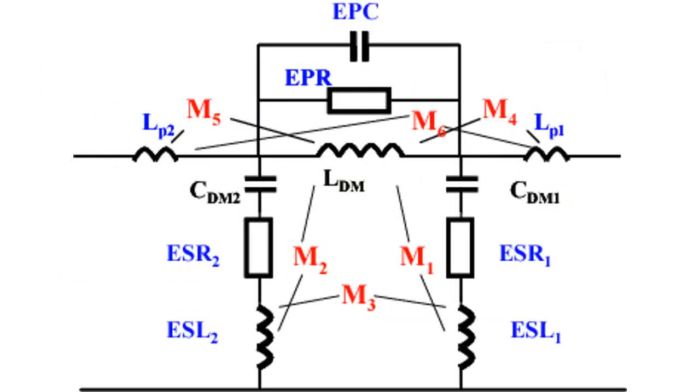Differential mode noise is a result of parasitic components in a circuit, such as equivalent series inductance (ESL), equivalent series resistance (ESR), or components.